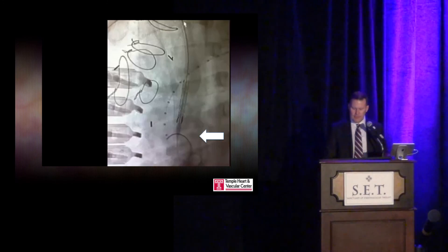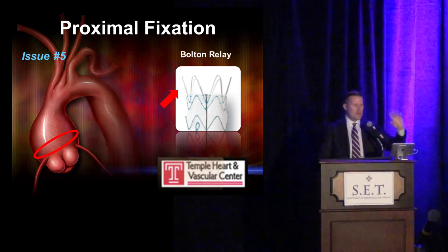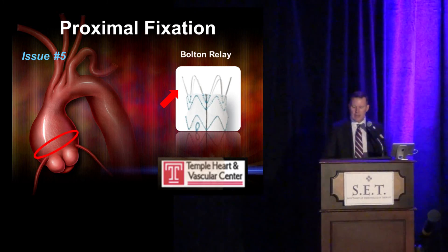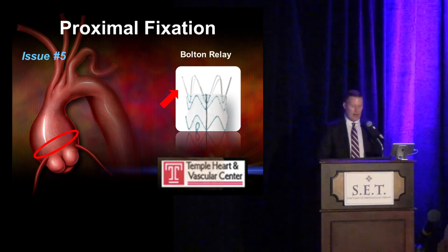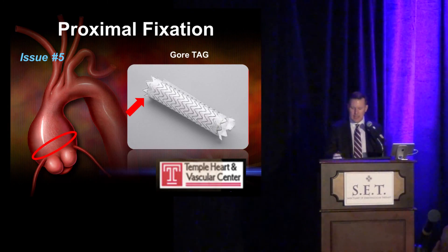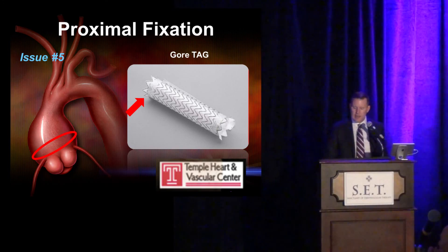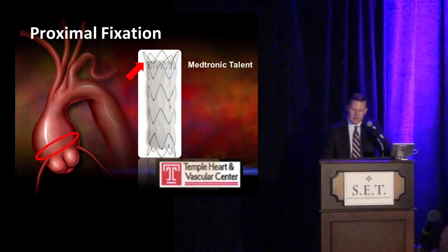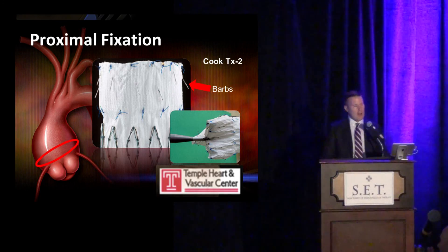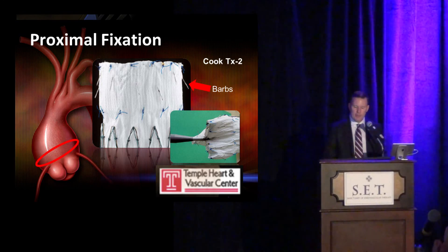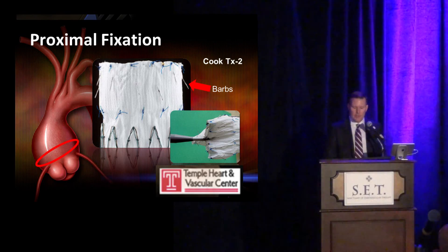The next topic is proximal fixation. Having addressed length, deployment, and nose cone issues, the next question is: what is the optimal configuration when landing proximally in the aortic root, at the sinotubular junction, and ascending aorta? Do we need bare metal springs as in the Bolton Relay? The Gore TAG has flares; the C-TAG has shorter flares. The Medtronic Talent and Valiant have bare metal springs. The Cook TX2 has barbs — and whether those barbs are ideal in the ascending aorta we don't know. We need to understand the best proximal fixation design because of concerns about coronary arteries, valvular function, and root dynamics.